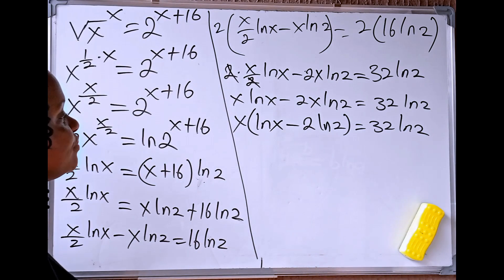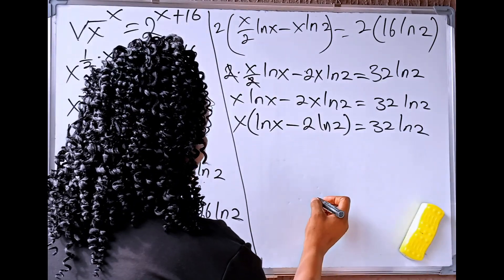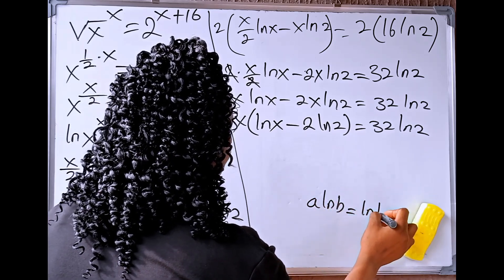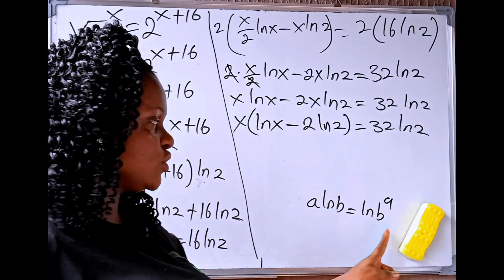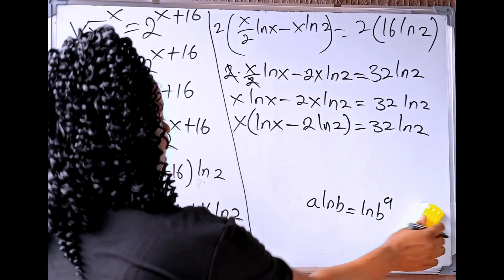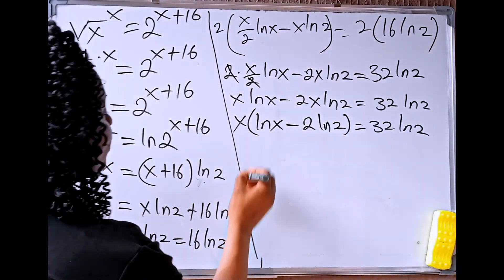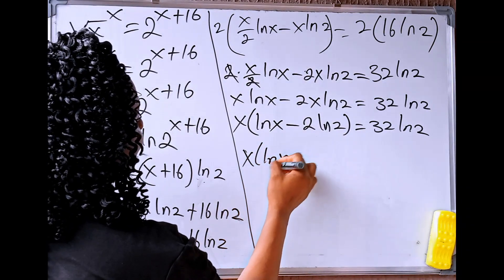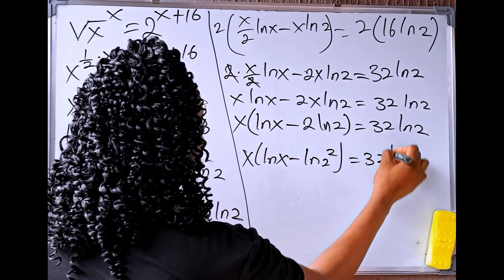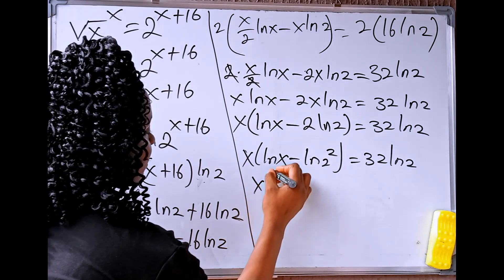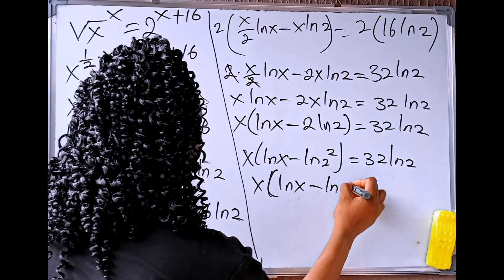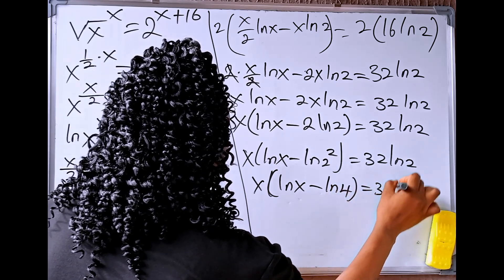Now, from here, we are going to apply this rule: if we have a ln of b, this equals ln of b to the power of a. So 2 ln of 2 becomes ln of 2 squared. We are going to have x in brackets times ln of x minus ln of 2 squared equals 32 ln of 2. Since 2 squared is 4, this becomes x times ln of x minus ln of 4 equals 32 ln of 2.